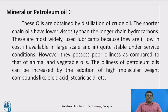The second example of liquid lubricant is mineral or petroleum oil. These oils are obtained by distillation of crude oil. The shorter chain oils have lower viscosity than the longer chain hydrocarbons. These are the most widely used lubricants because they are low in cost, available on a large scale, and quite stable under service conditions. However, compared to animal and vegetable oils, they possess poor oiliness. The oiliness of petroleum oils can be increased by addition of high molecular weight compounds like oleic acid, stearic acid, etc.